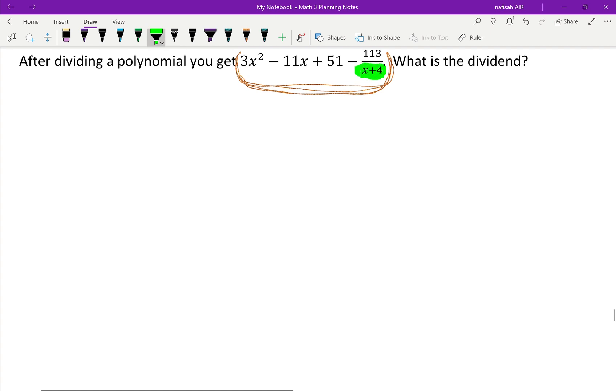Because I know how to read remainders, in this case I'll have x + 4 being divided into some polynomial, and my answer would have been 3x² - 11x + 51 - 113/(x+4).